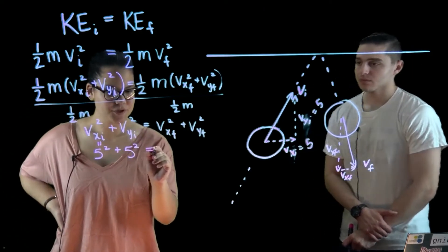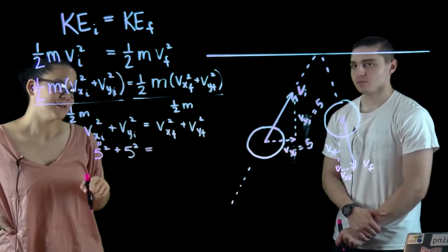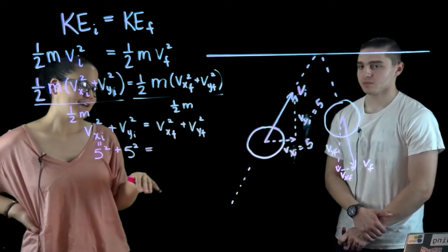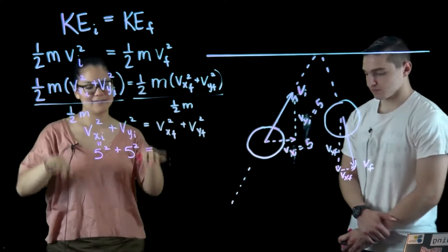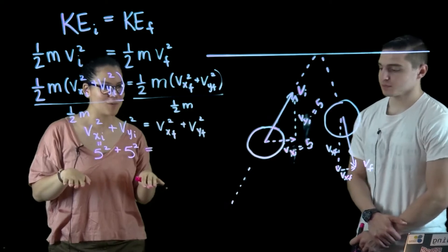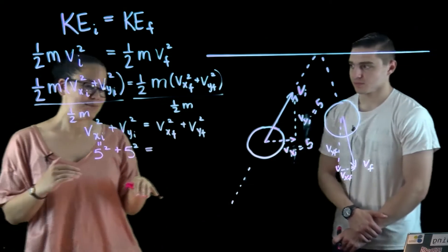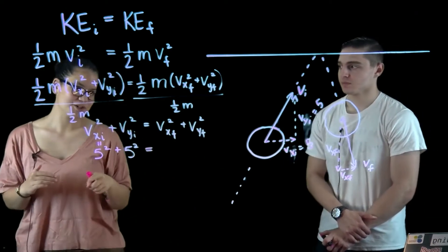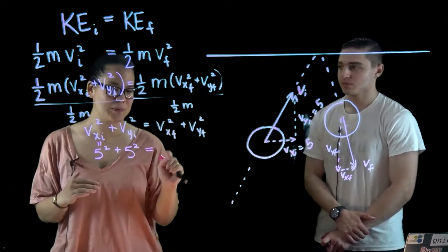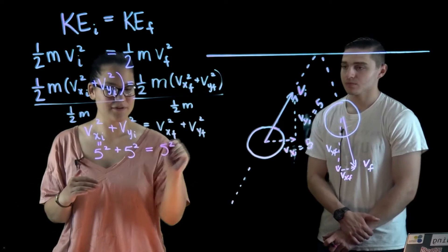So we know those initial components and we want to know what's on the right-hand side here. Now what we're considering here is that the ceiling is only pushing down on the blob when it hits it. So that means that there's no force in the horizontal direction. And so that velocity component won't change. So we can say that this is also 5 squared.